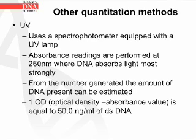The UV method uses a spectrophotometer equipped with a UV lamp. The absorbance readings are performed at 260 nanometers, where DNA absorbs light more strongly. From the number generated, the amount of DNA can be estimated. This is because 1 OD (optical density), which is the absorbance value for the DNA, is equal to 50.0 nanograms per milliliter of double-stranded DNA.